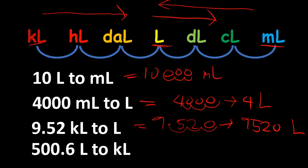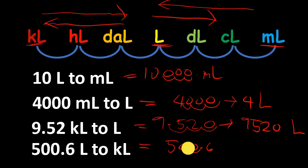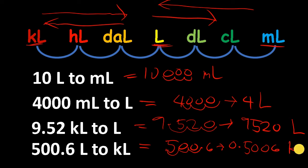How about 500.6 liters to kilolitres? From liters going to kilolitres is going to the left, three places. Moving the decimal point three places to the left, the answer is 0.5006 kilolitres.